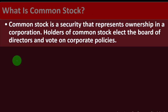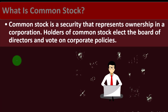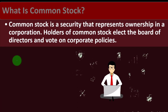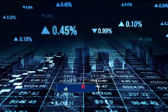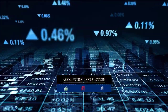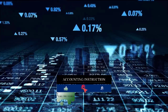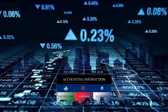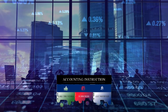Common stock is a security that represents ownership in a corporation. Holders of common stock elect the board of directors and vote on corporate policies. When we think about investing in common stock, we're usually thinking about corporations that are on an exchange — larger, publicly traded corporations.